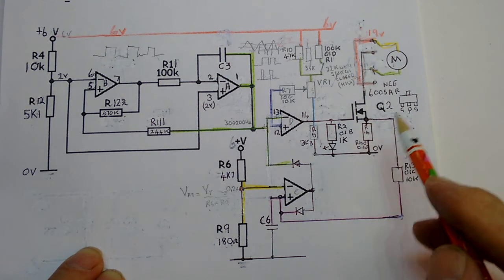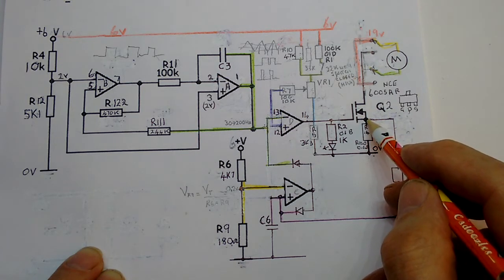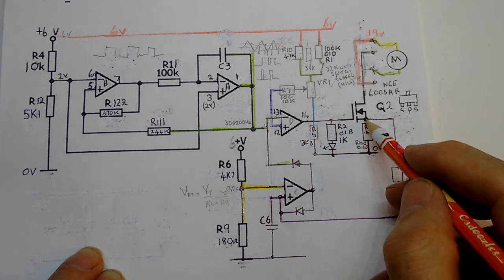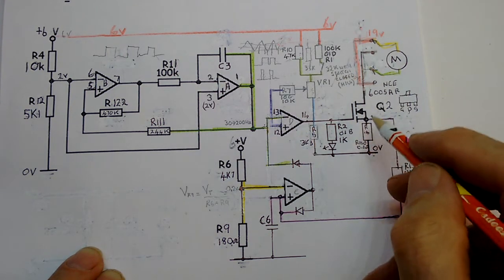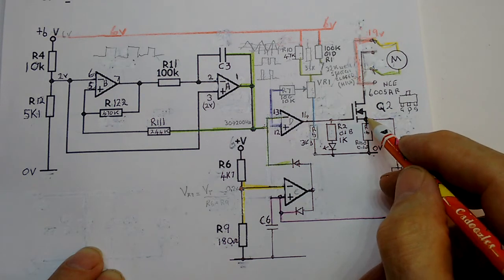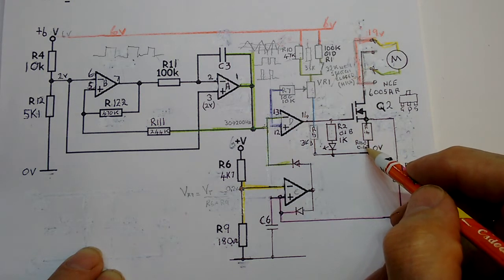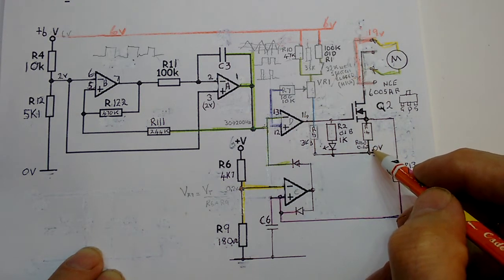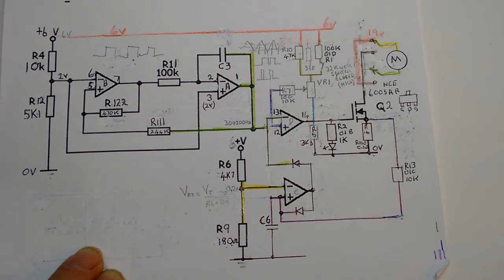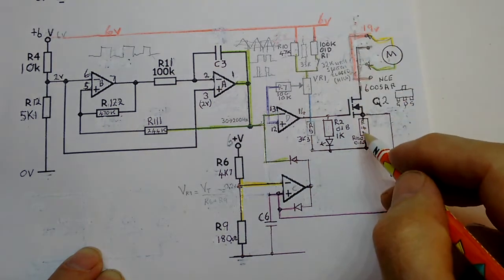Over here though, we have a sense resistor. Now the sense resistor is between the source of the FET and 0 volts. So there will be a current flowing through it, and because this is a very small resistor, it's a 0.1 ohm resistor, it will have all the current flowing through it, but because it's a low value it will only produce a low voltage across it.